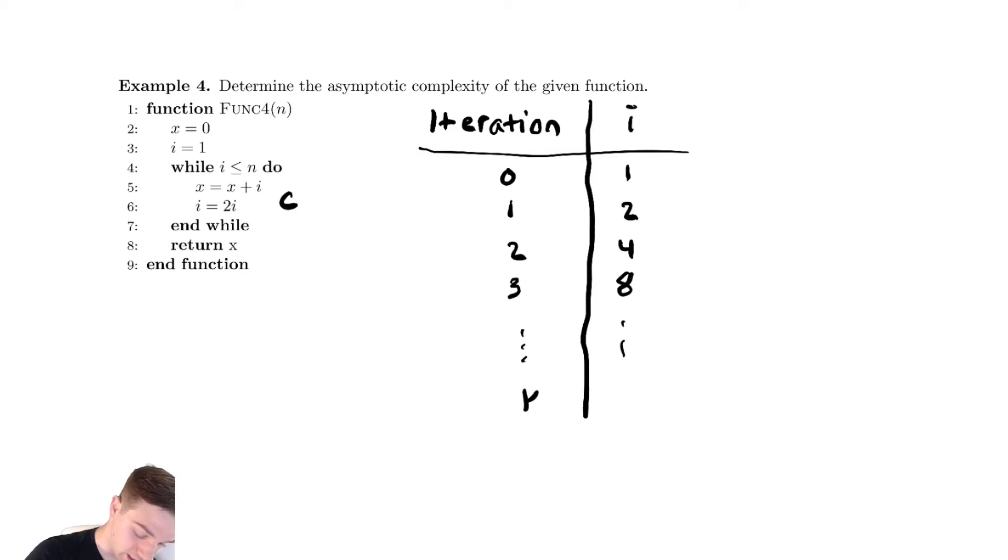After k iterations I have two to the k. This is probably the easiest pattern for us to recognize, is powers of two. So this loop will stop when we have two to the k is equal to n. And again if we're being precise we'd want that greater than n, but that will never affect our results too much.